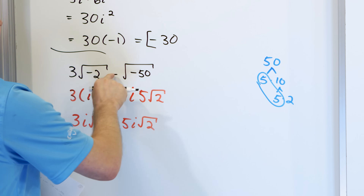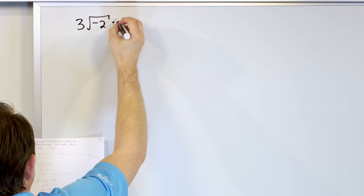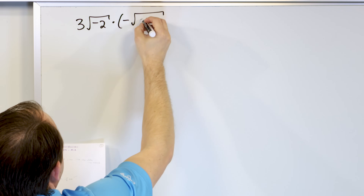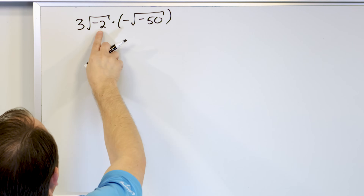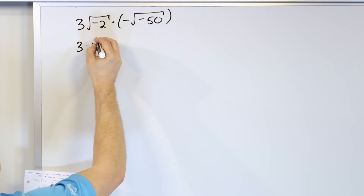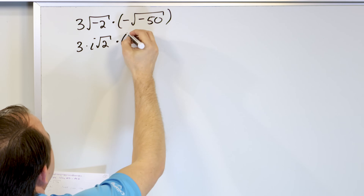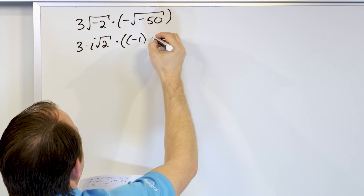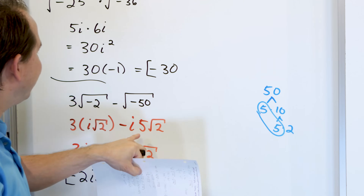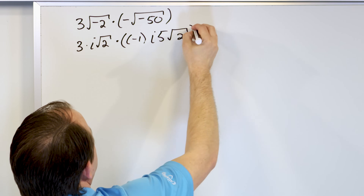Now let's take that same problem and change it to multiplication: 3 times the square root of negative 2, multiplied by the square root of negative 50. The first part is the same: 3 times i times root 2. For the second part, we have a negative out front, so let's put that negative 1 in parentheses. The square root of negative 50 gives us i and 5 times root 2. So we're multiplying 3i√2 by negative 5i√2.